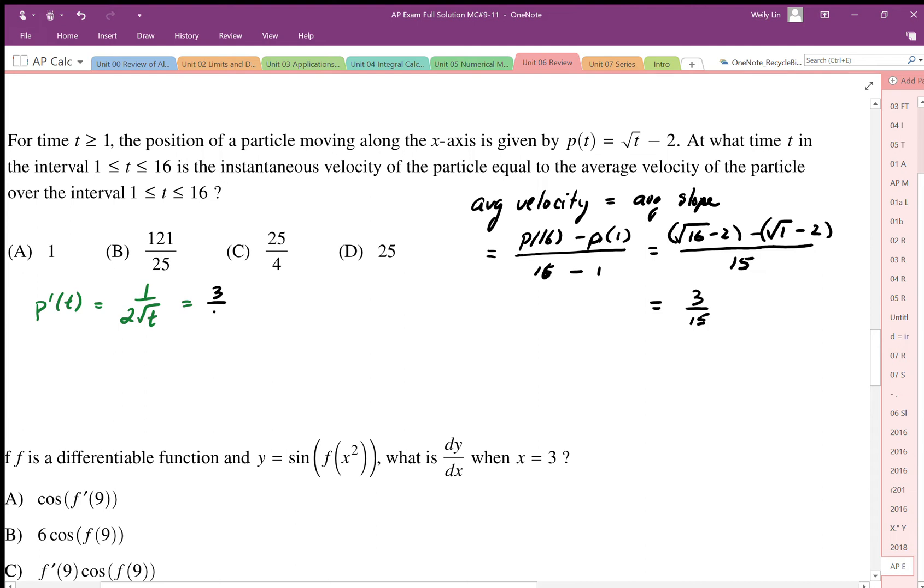I'm just going to simplify this 3 over 15 becomes 1 over 5. I'm going to solve that equation for t. So I get 5 over 2 equals square root t. Square both sides. So t is equal to 25 over 4. The answer is C.